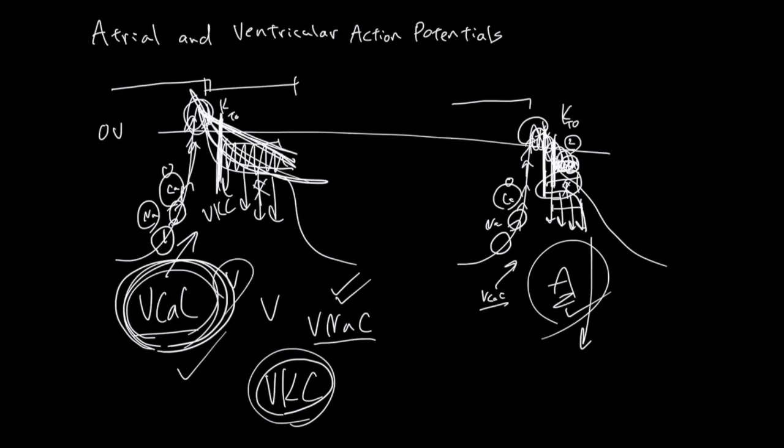Furthermore, the delayed rectifiers fire a little bit earlier compared to the ventricle. Because they fire earlier, their influence starts earlier, and they get to finish up the fight to drive this action potential down sooner. And overall, the combination of having less calcium channels inactivate and sooner kicking in of the potassium channels shortens the phase 2 of the atrium.